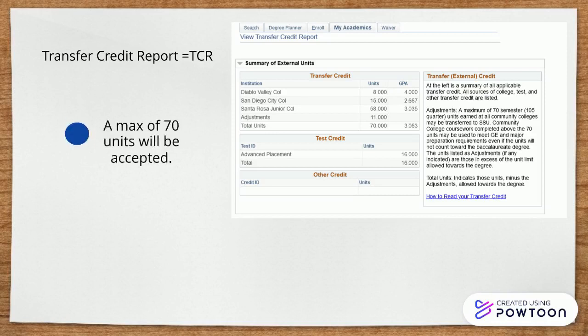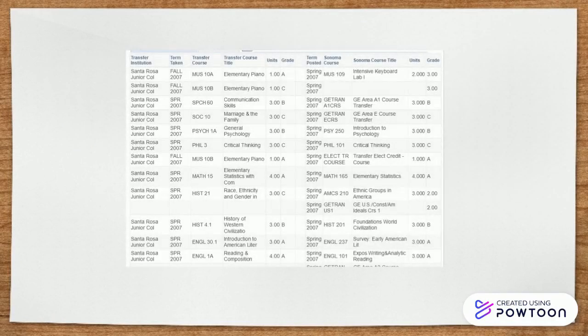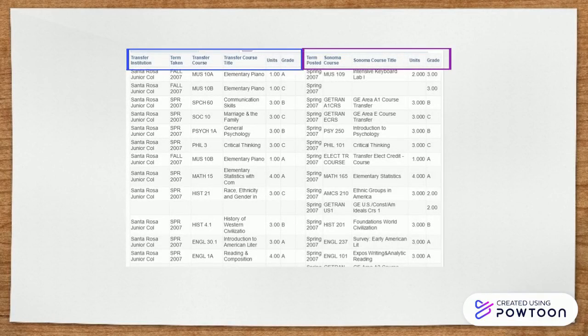Additionally, remember SSU can only accept a max of 70 transfer units. Next in your TCR, all courses that have been transferred over to SSU will be listed. On the left-hand side, you will see where you took the course, while the right-hand side will demonstrate the equivalence, if any, at SSU. Note, not all courses will have equivalent courses at SSU and will be marked as a transfer elective. If you have any questions, contact your advisor.